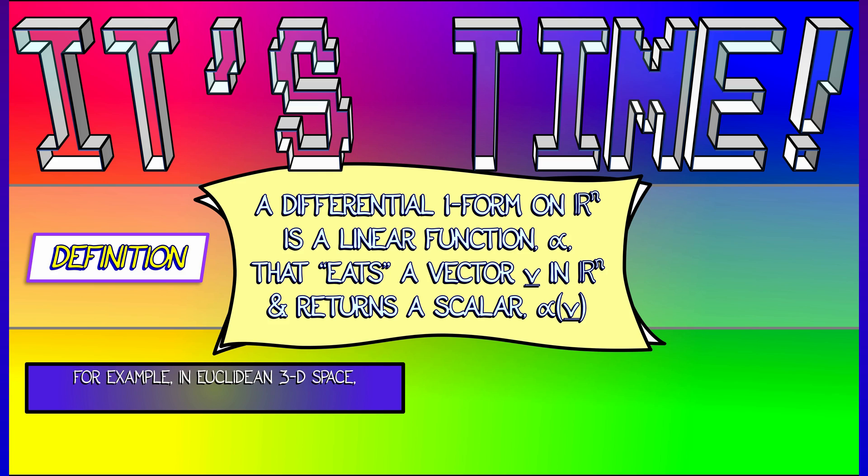Okay, so for example, in Euclidean 3 space with x, y, z coordinates, a typical one form is going to look like something of the form 3dx minus 2dy plus dz. It's going to have some scalars in front of those component one forms, dx, dy, dz.